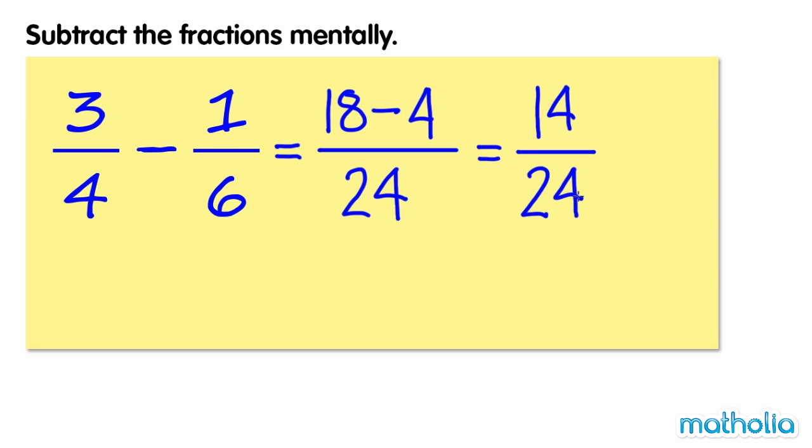14 twenty-fourths is not in its simplest form. Dividing the numerator and denominator by 2 gives us 7 twelfths. So, 3 quarters minus 1 sixth equals 7 twelfths.